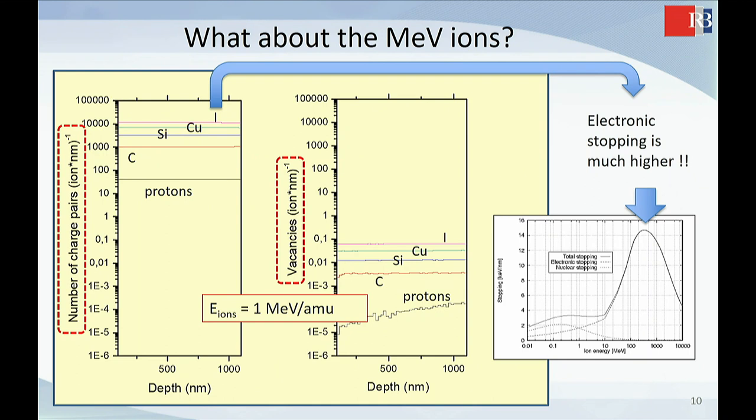So, what about MeV ions? Can these MeV ions also do the same? So the difference between keV ions that are sputtering this material and MeV ions is that nuclear stopping is completely low. So the probability to scatter whole atoms is very low. But we have extremely high electronic stopping power, which means that a lot of ionizations are made.